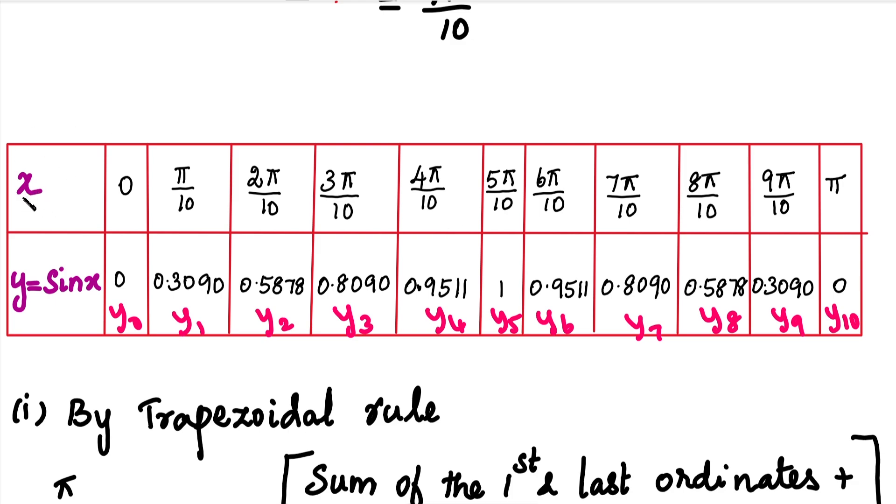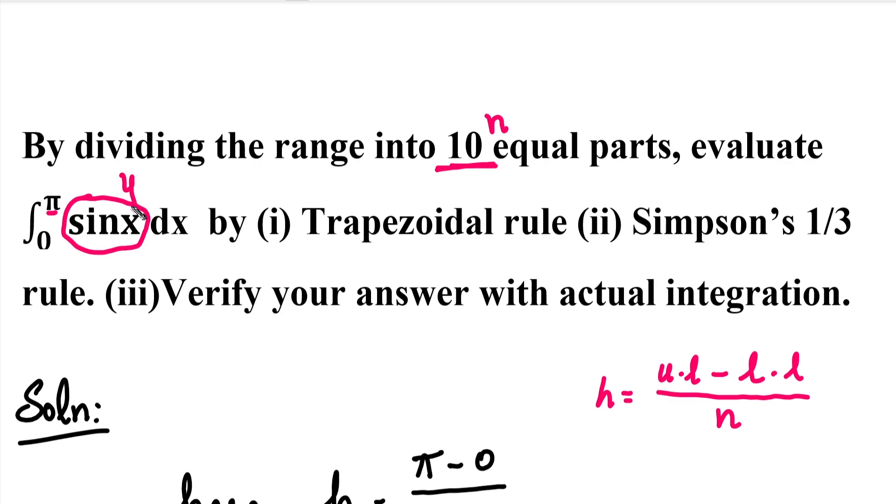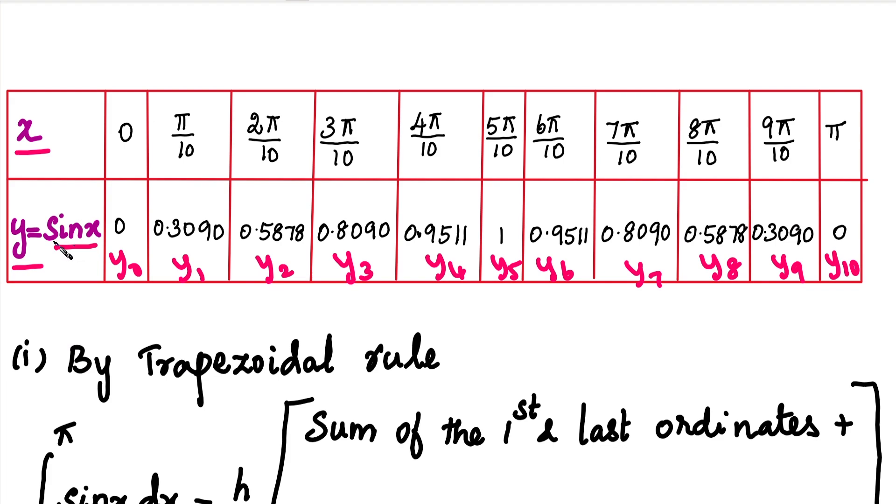Now we create a table form. The first column is x values and the second column is y values, where y is the function sin x. For the x values, we start at the lower limit 0 and add h each time. Adding 0 and π/10 gives π/10, then 2π/10, then 3π/10, and so on until the upper limit π, which is 10π/10.